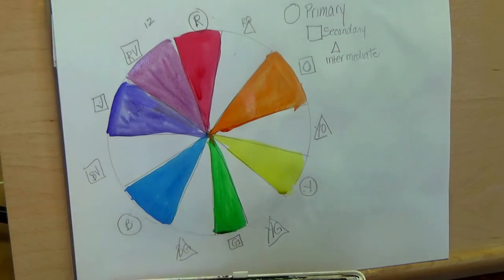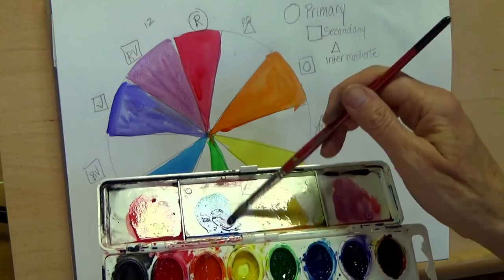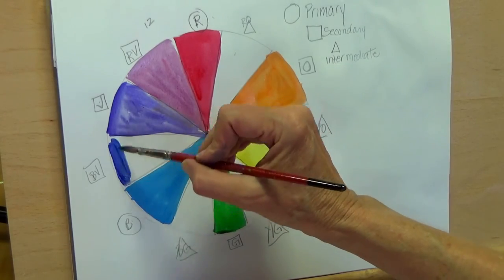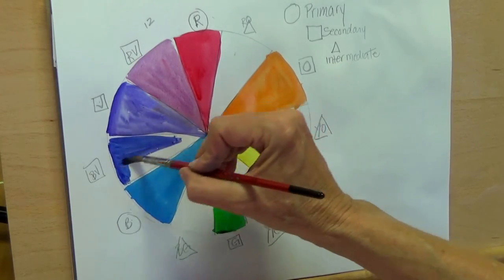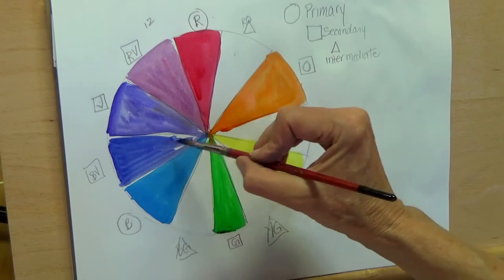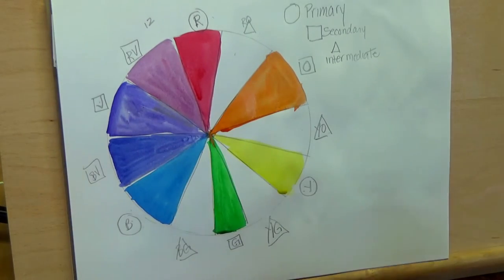Now you're going to do a blue-violet. Clean your palette as you need to. I love that color, isn't it beautiful? Paint it.